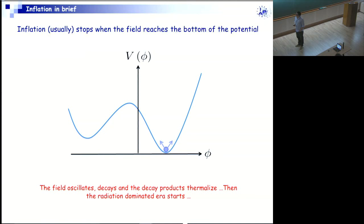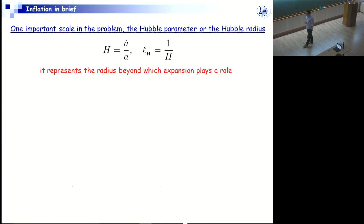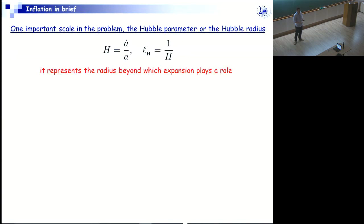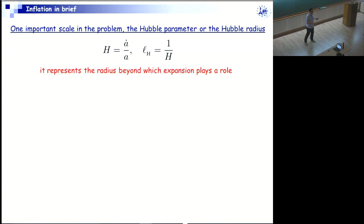Let's try to put some numbers. There is one important scale in this theory, which is the Hubble parameter — A-dot over A — the expansion rate of the universe. Equivalently, you can discuss the problem in terms of the inverse of this expansion rate, which is the Hubble radius. Physically, the Hubble radius tells you at which length scale you should take into account the fact that the universe is expanding. If you consider a physical phenomenon whose characteristic scale is much smaller than the Hubble radius, you do not need to take into account the expansion — for instance, a tabletop experiment in this room, since the size of the room is much smaller than the Hubble radius today.